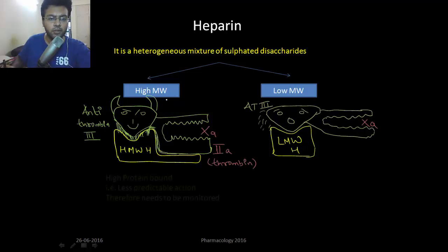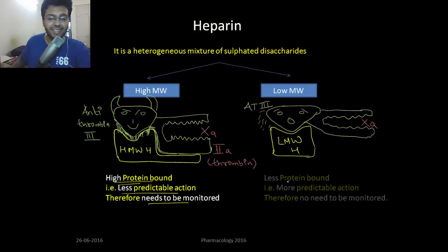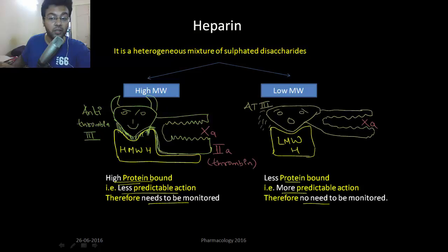High molecular weight Heparin is highly protein bound, therefore it has less predictable action and needs to be monitored. Whereas low molecular weight Heparin is less protein bound, it has more predictable action, and therefore does not need to be monitored.